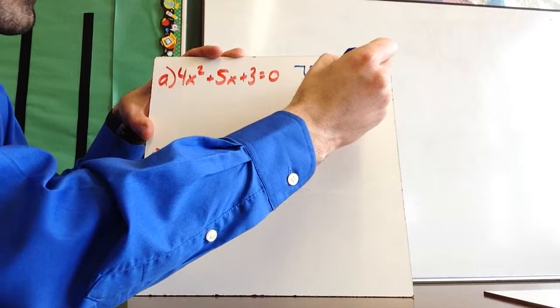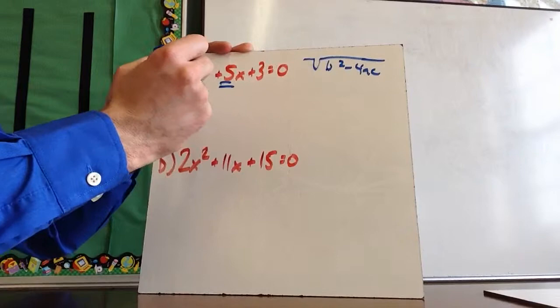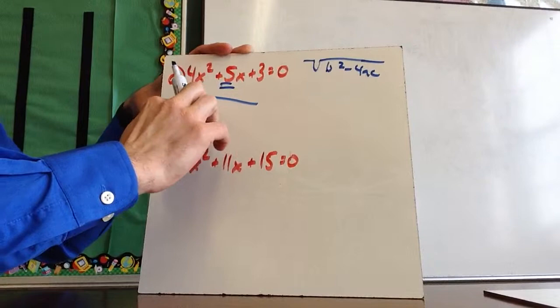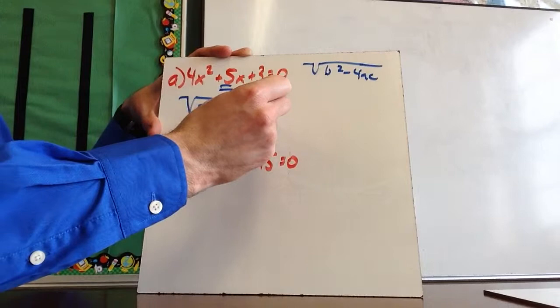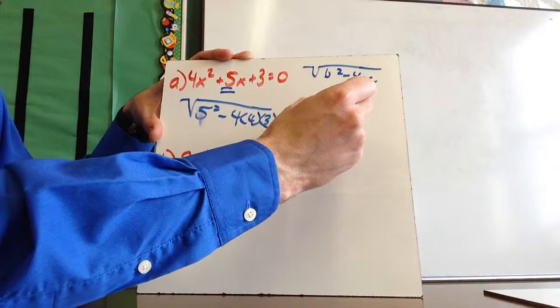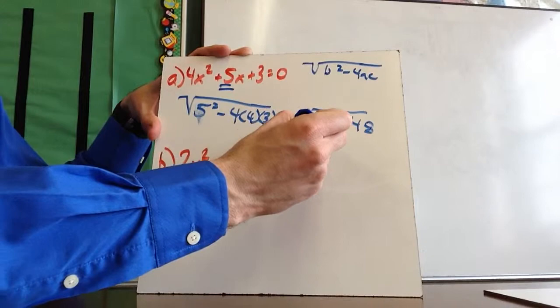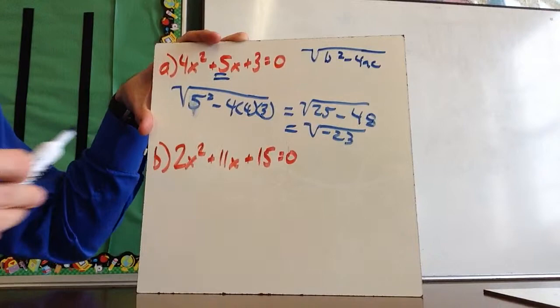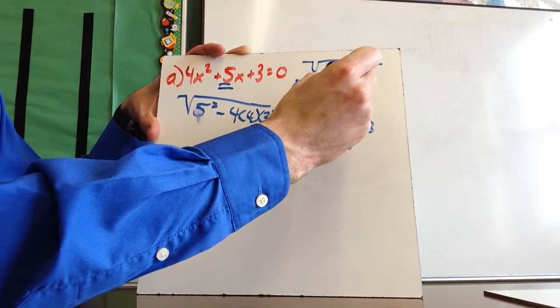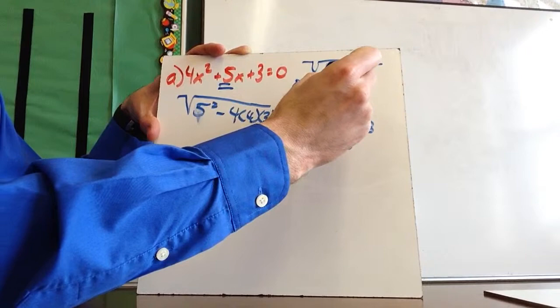For the first practice problem: b squared minus 4ac. With b equals 5, a equals 4, c equals 3: 5 squared minus 4 times 4 times 3 equals 25 minus 48 equals negative 23. Since the discriminant is negative 23, there is no real square root, which means this problem has zero real solutions.